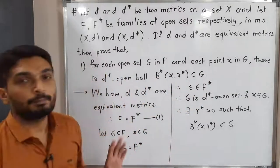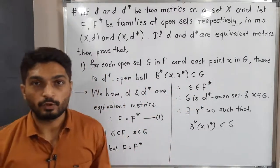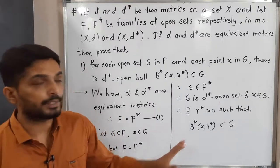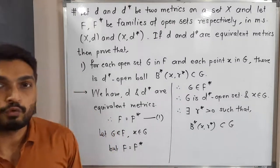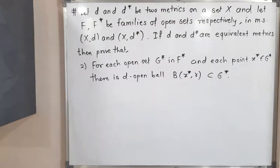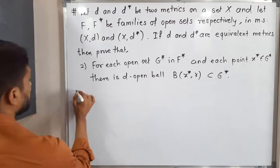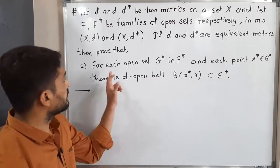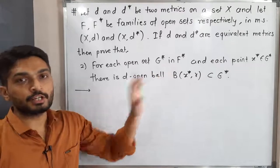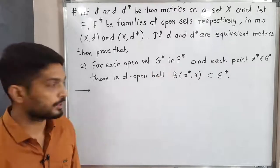So in this way we proved the first part. The first part is complete. Let us go for the second part — make a screenshot of it, then we will go further. Let us discuss the second part now. In the second part, they have mentioned: for each open set G star in F star.